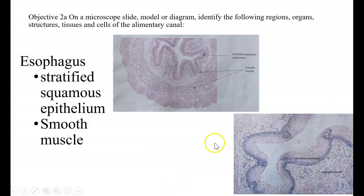Objective two, on a microscope slide, model or diagram, identify the following regions, organs, structures, tissues, and cells of the alimentary canal, or the GI tract. So, there are some pictures that you should look at and some structures that I want you to know.